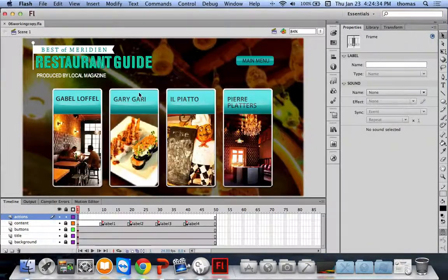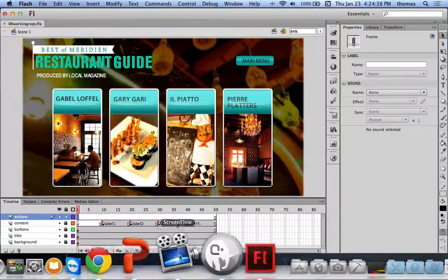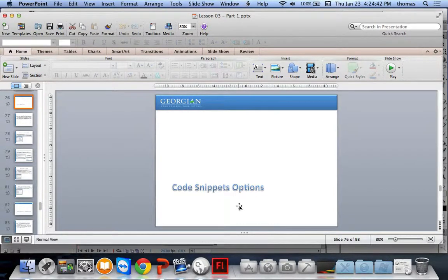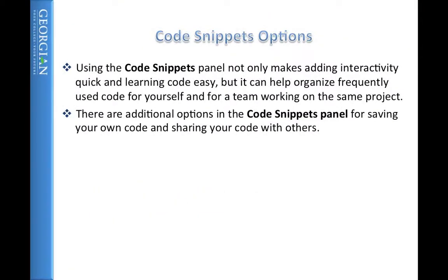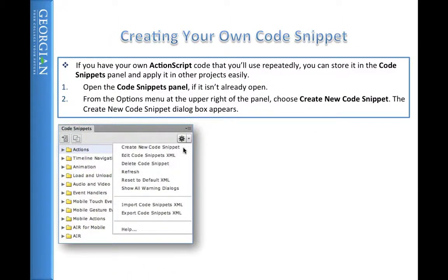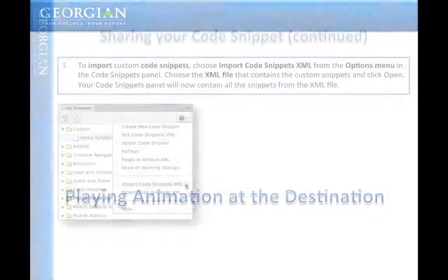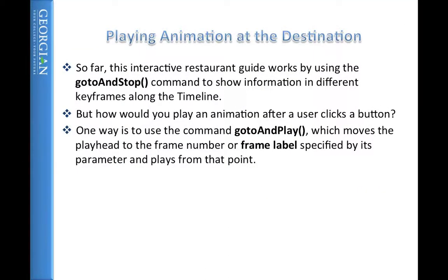Code snippets are great, and you can also create your own — especially for code you use repeatedly, or to share with team members so they don't have to reinvent the wheel. So far we've got this interactive restaurant guide using gotoAndStop. But what about playing some animation when we click a button — like a hover animation? Let's create some transition animations.